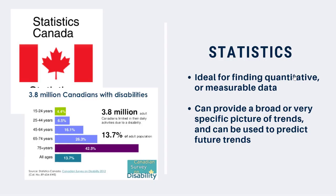Statistics are very helpful if you need quantitative or measurable data. For example, in Canada the government conducts a census every five years to gather information about the country and people living here, such as the number of people in each community, what languages they speak, and how old they are. Statistics can be used to give us a very broad picture, such as how many people live in Canada, or a much more focused picture, such as how many people in Toronto were born outside of Canada and what language they speak.